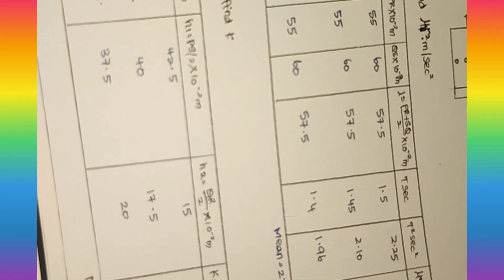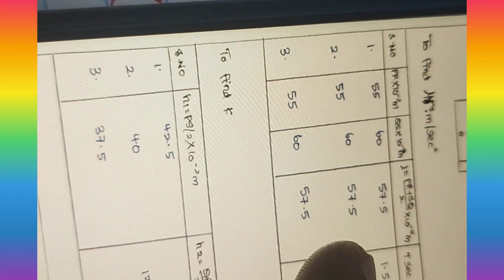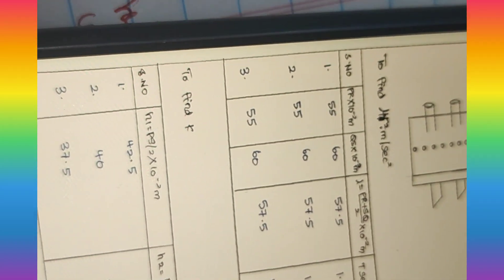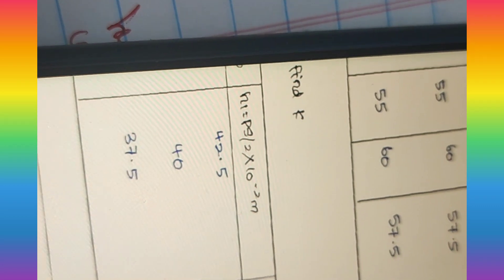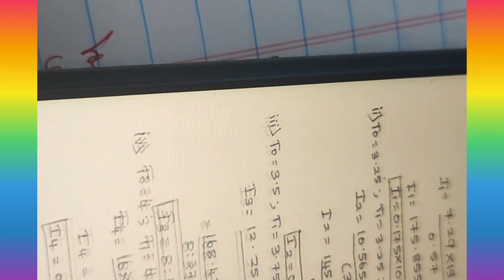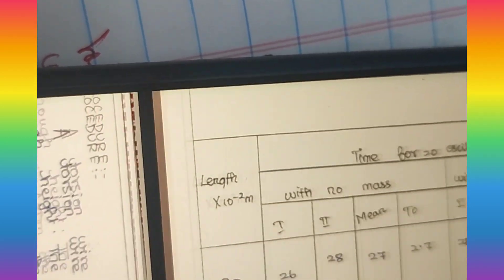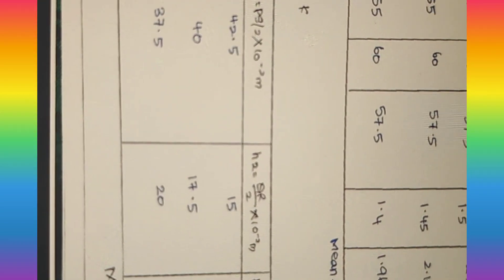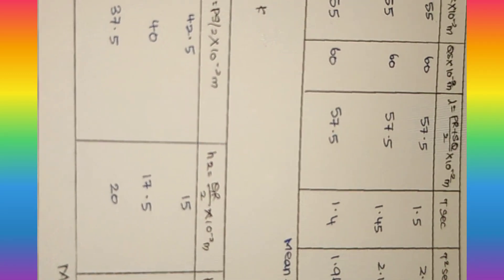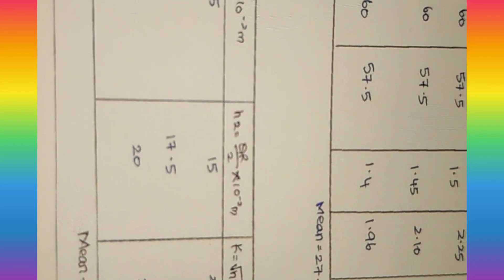For finding K — the radius of gyration — the formula is root of H1 into H2. H1 is taken from the graph as the value of PS divided by 2. Then you take the value of QR from the graph for H2. By using this formula, root of H1 into H2, we can find the radius of gyration.